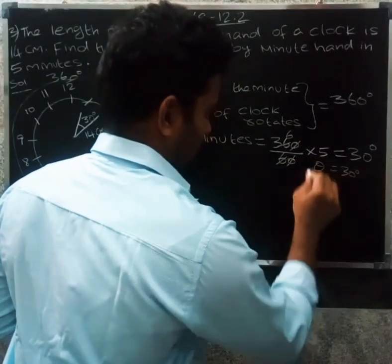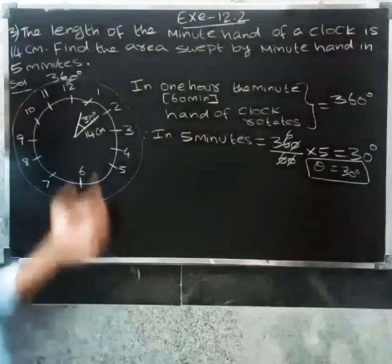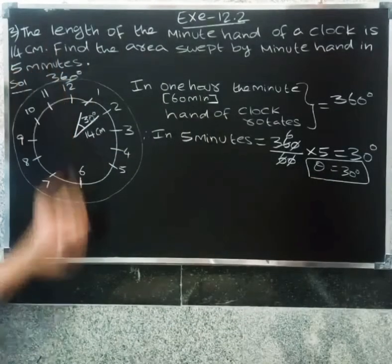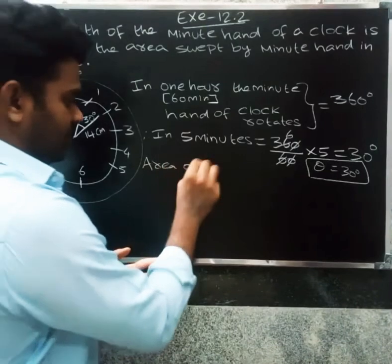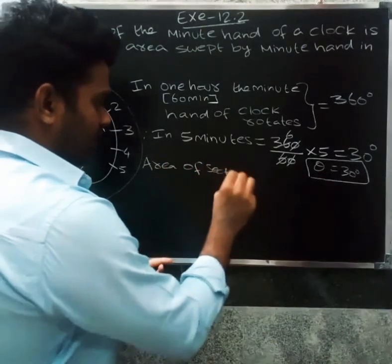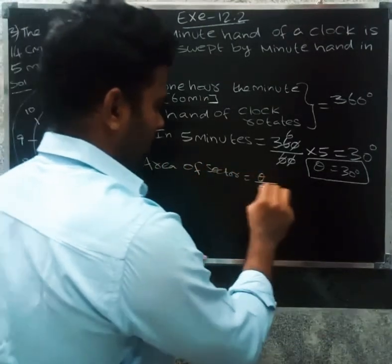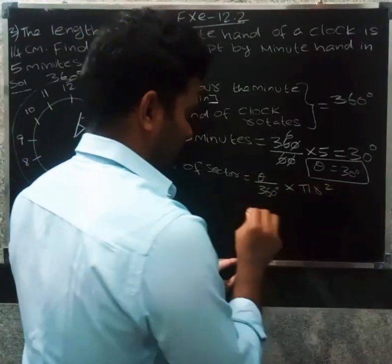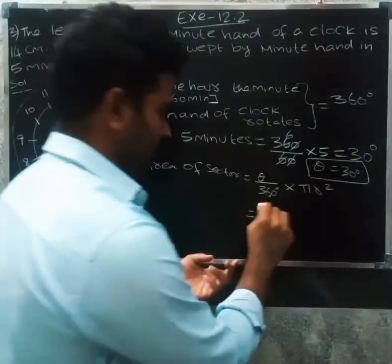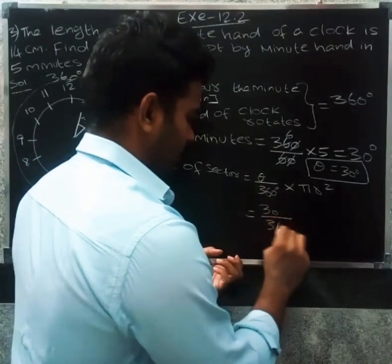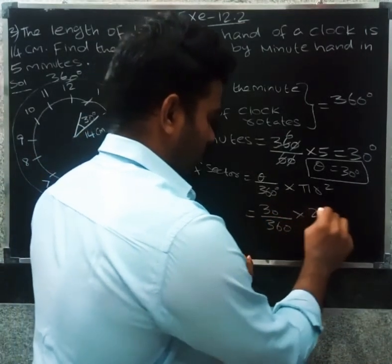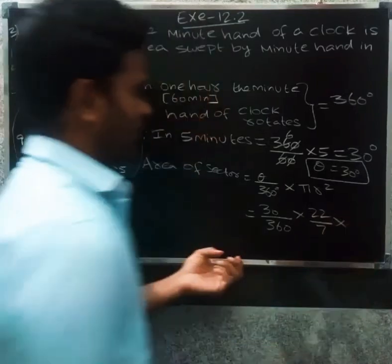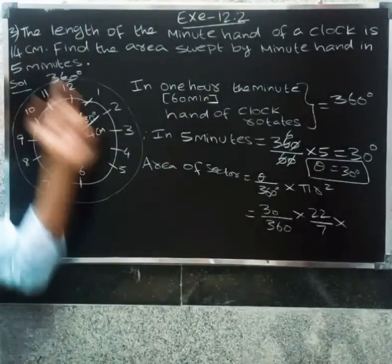Now let's find the area. Area of the sector equals theta by 360 times pi r squared. So theta value is 30 by 360 times pi, which equals 22 by 7, times r squared equals 14 squared.